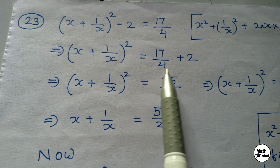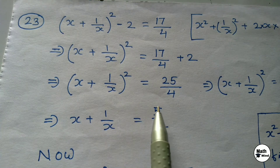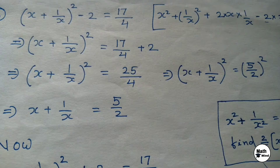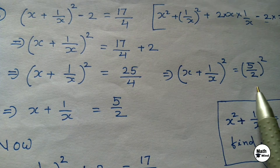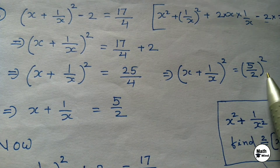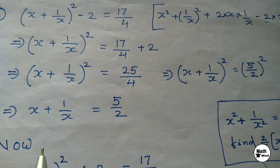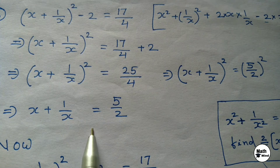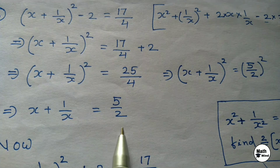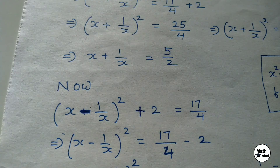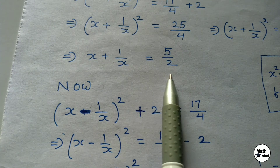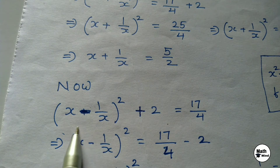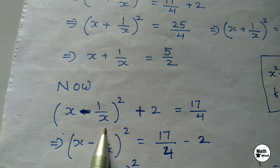Both sides are perfect squares, so we take the square root of both sides. (x+1/x)² = (5/2)². Hence x+1/x = 5/2.